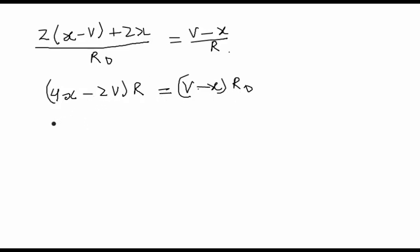Let's take all the X to the left hand side. We will first open it: 4XR minus 2VR is equals to VR0 minus XR0.